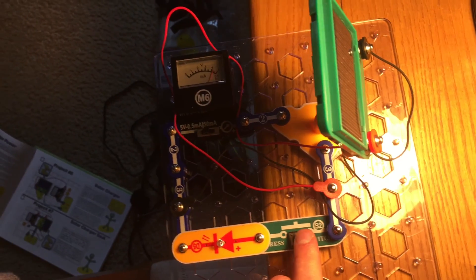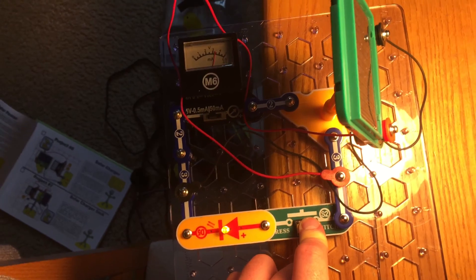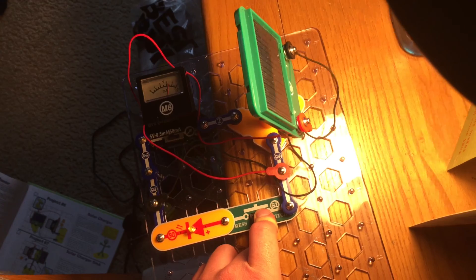Now I'm going to push the press switch and the yellow LED comes on. Because it is now a complete circuit. There is enough energy to power it.